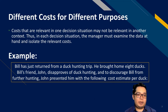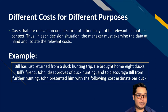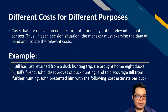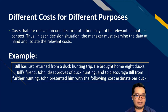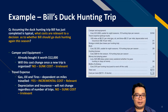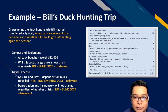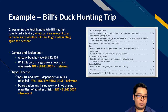An example: Bill has just returned from a duck hunting trip. He brought home eight ducks. Bill's friend John disapproves of duck hunting and, to discourage Bill from further hunting, John presented him with a cost estimate per duck of about $34, saying Bill should just buy ducks at the grocery store instead of going hunting.